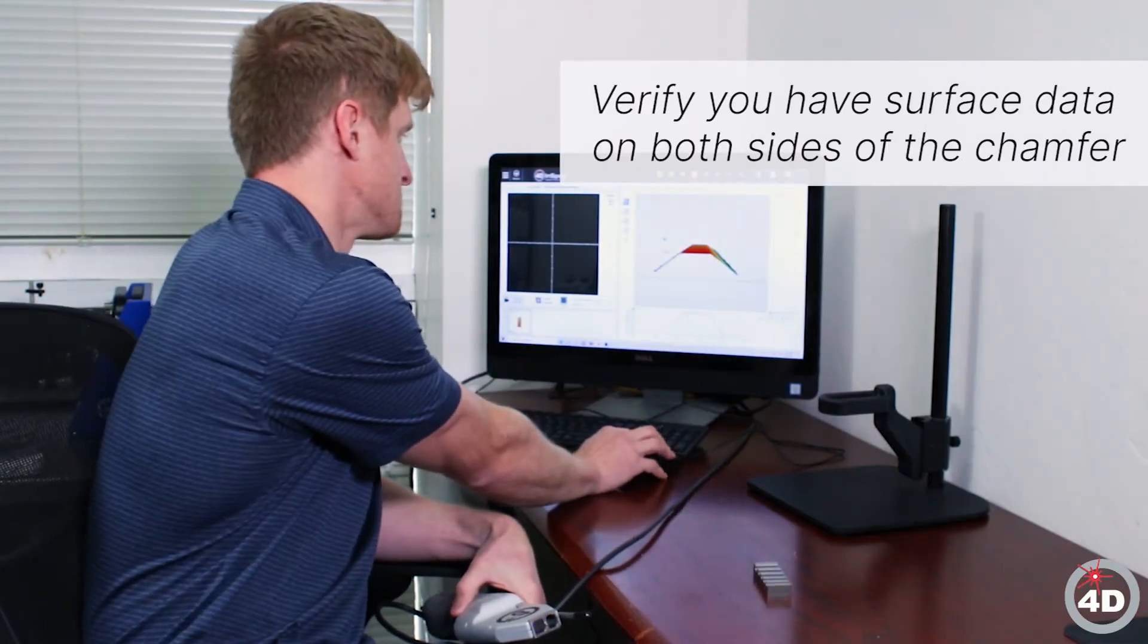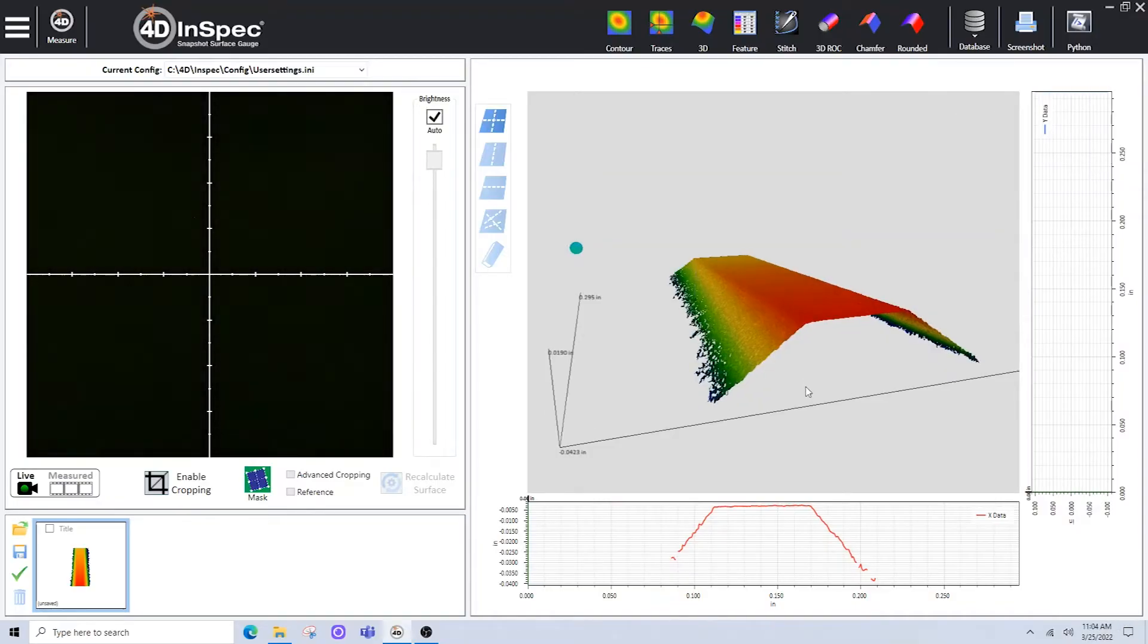What I'm looking for here is a measurement with data on the left side, the chamfer face, and the right side.